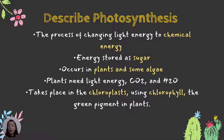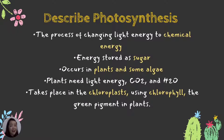Photosynthesis occurs in plants and some algae. Plants need light energy, carbon dioxide, and water. It takes place in the chloroplasts using the chlorophyll, which is the green pigment in plants. The chloroplasts are found inside the plant cell, and the job of the chloroplasts is to make food for the plants. Inside the chloroplasts there is chlorophyll.